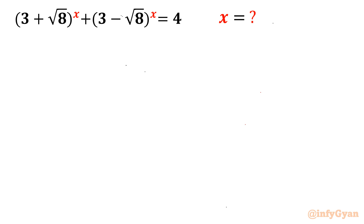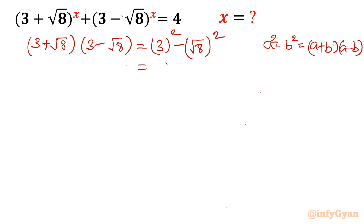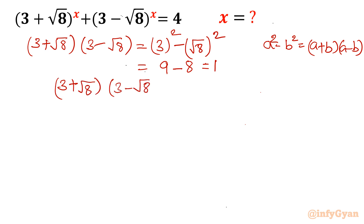See this product term. If I take the product of (3 + √8) and (3 - √8), we know the formula for difference of squares: (a + b)(a - b) = a² - b². So it gives us 3² - (√8)² = 9 - 8 = 1. So (3 + √8)(3 - √8) = 1.